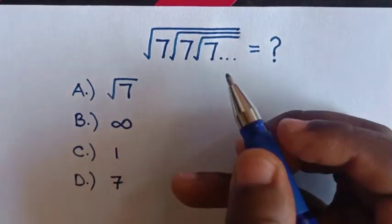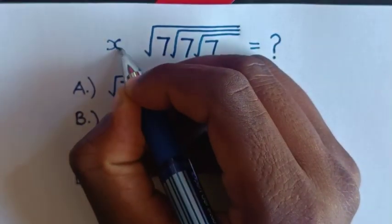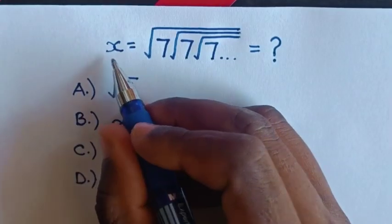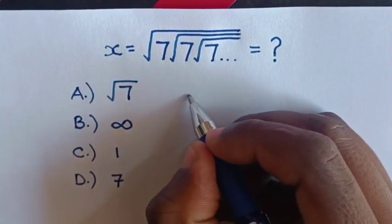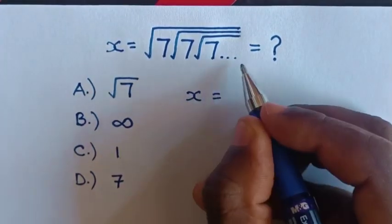So first, we let this expression equal x. Then we square on both sides.